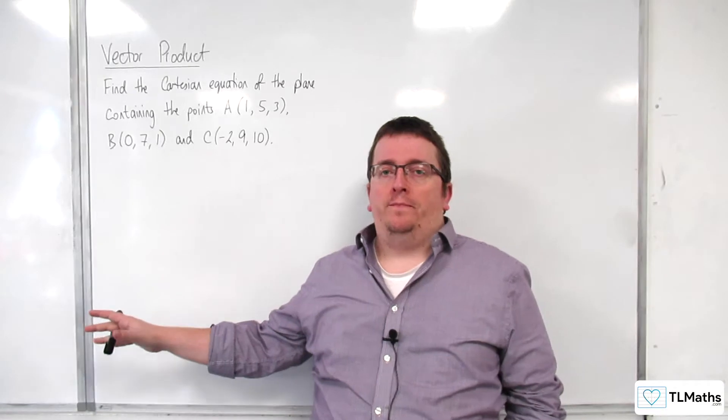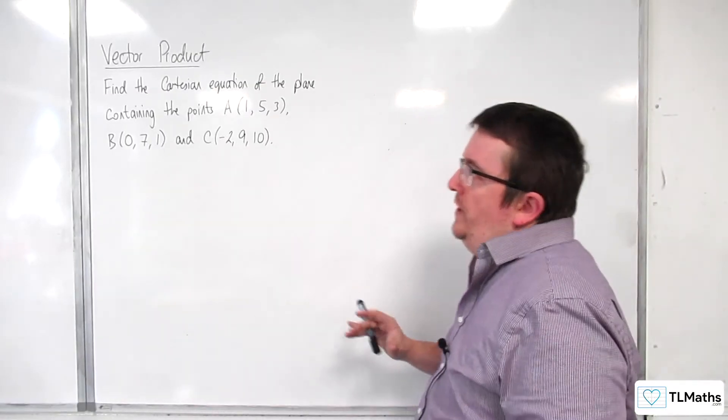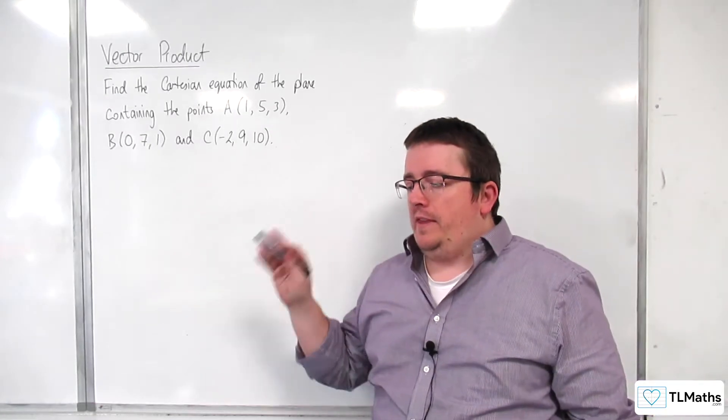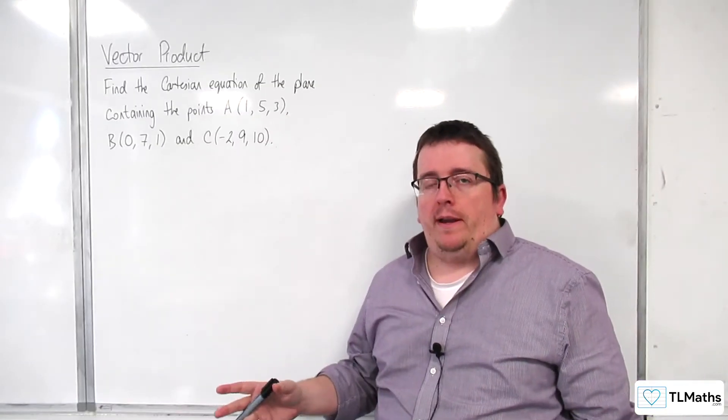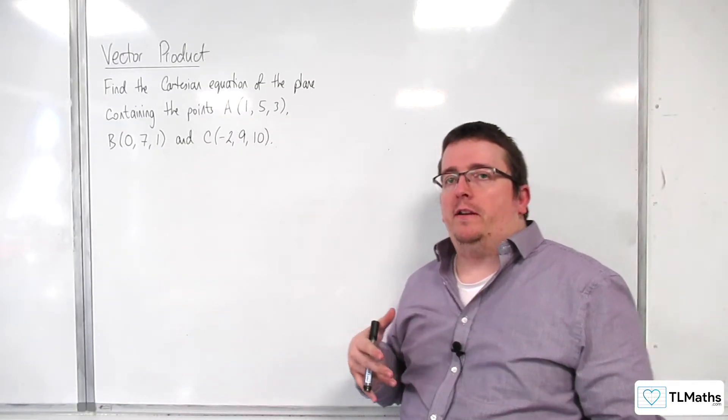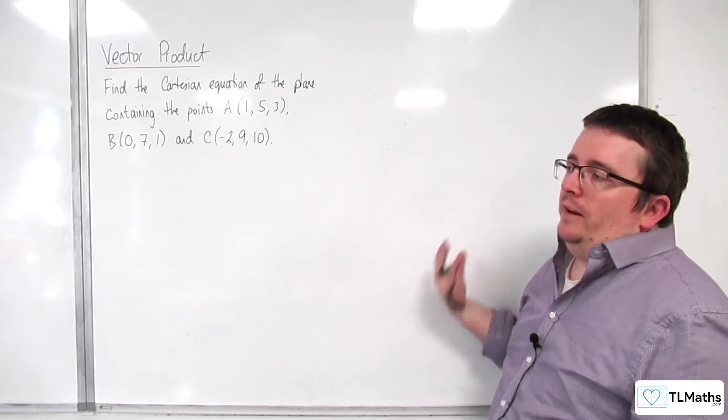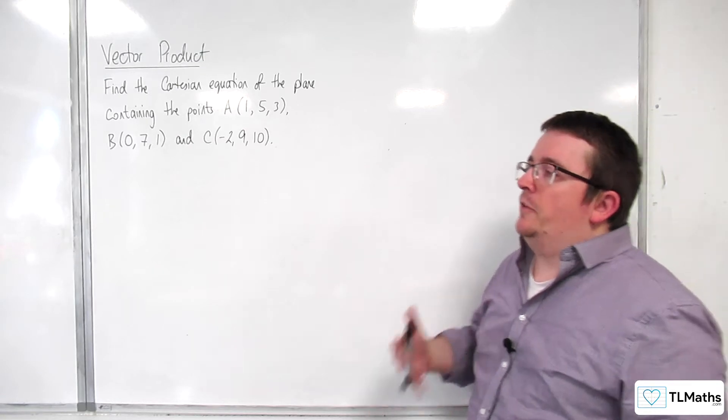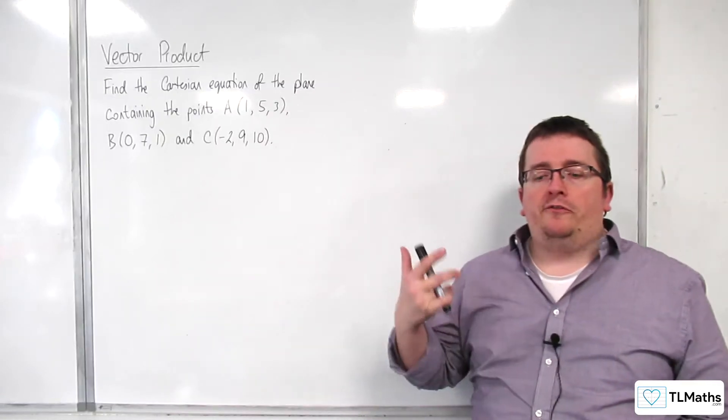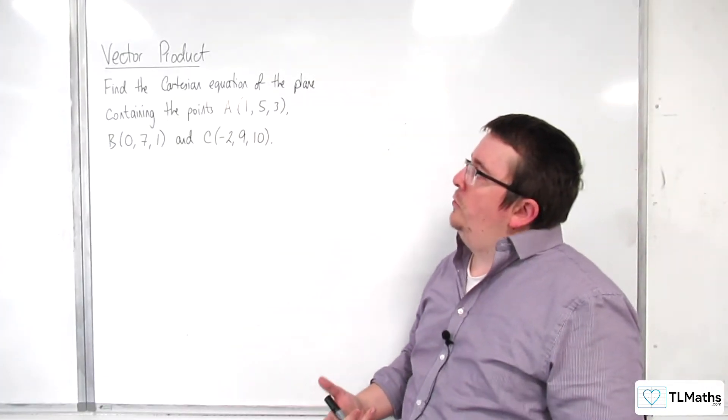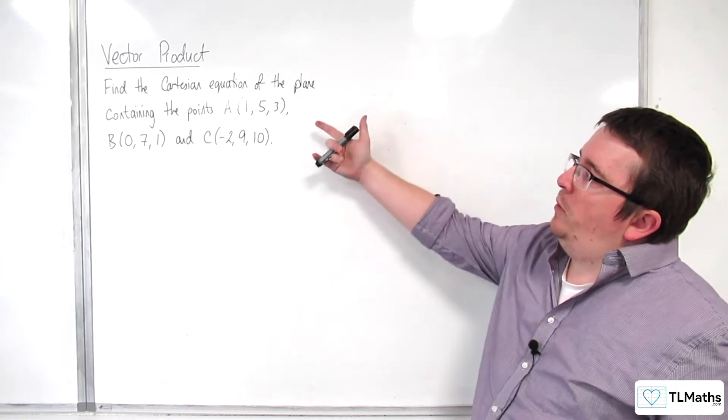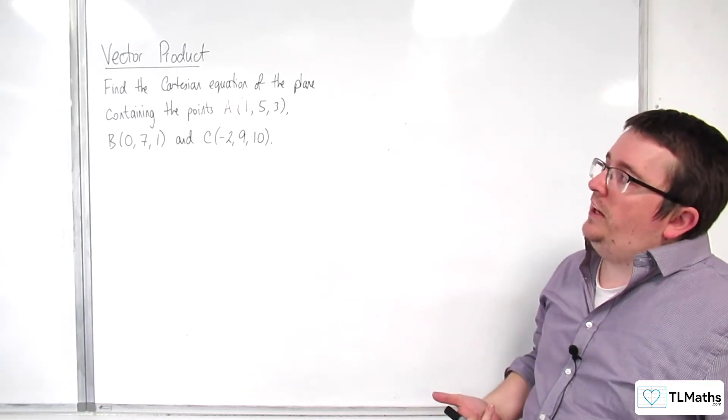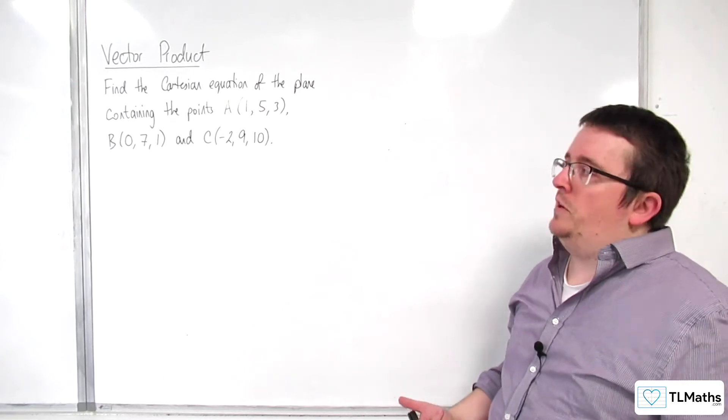Further back in this section, I went through a video where I looked at how you could convert the vector equation of a plane into the Cartesian equation of a plane algebraically, and it's quite an arduous process to get there. I'm going to answer the same question now using the vector product. So here we've got three points which we know lie on a plane. Can we find the Cartesian equation of a plane using the vector product?